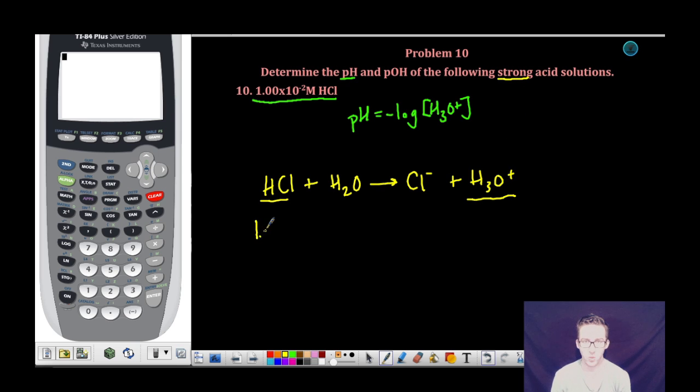And so if I had a 1.00 times 10 to the negative 2 molar HCl solution, because the relationship between those two things in the balanced chemical equation is one-to-one, and because this is a strong acid, assuming that all of this is going to completely ionize to form hydronium, the concentration of my hydronium ion is also going to be 1.00 times 10 to the negative 2 molar.